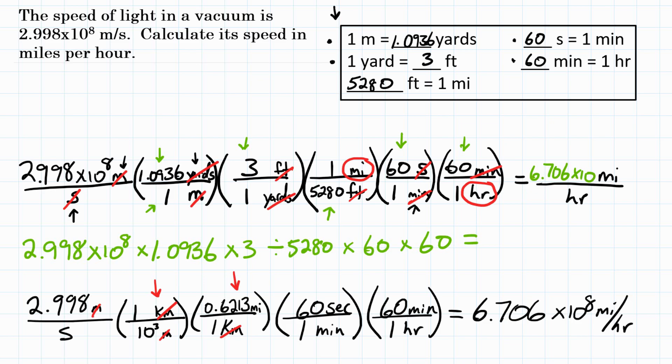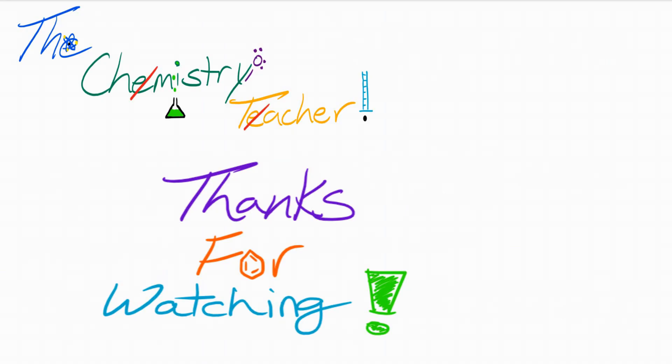There you have it. The speed of light in a vacuum in miles per hour. If you want to see another example, click in the top right. Please like this video if it helped you in any way. Feel free to look in the description below for additional help and resources. Please subscribe and ring the bell to get notified for new videos. And thank you so much for watching.